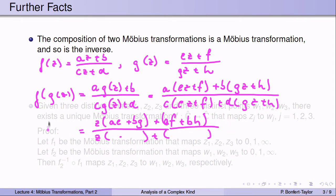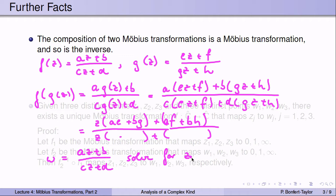Similarly, you can find that the inverse of a Möbius transformation is a Möbius transformation. You simply write w = (az + b) / (cz + d) and solve for z. When you solve for z, you will see that z is a function of w expressed in the form of a Möbius transformation.